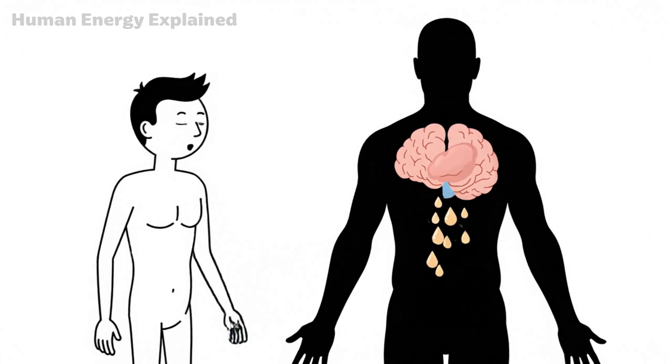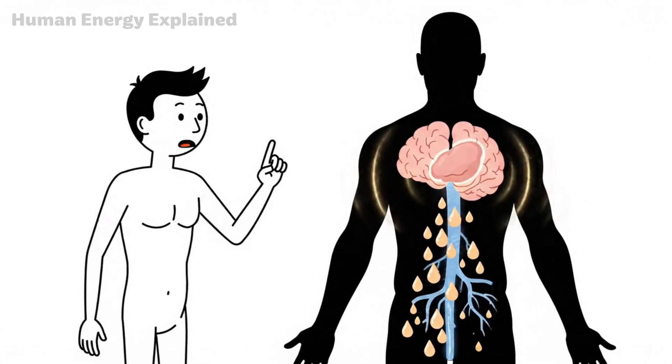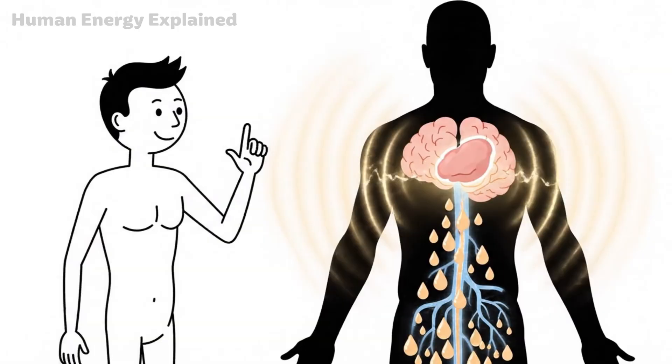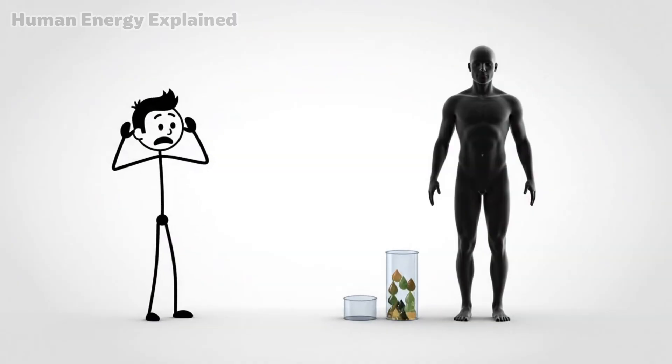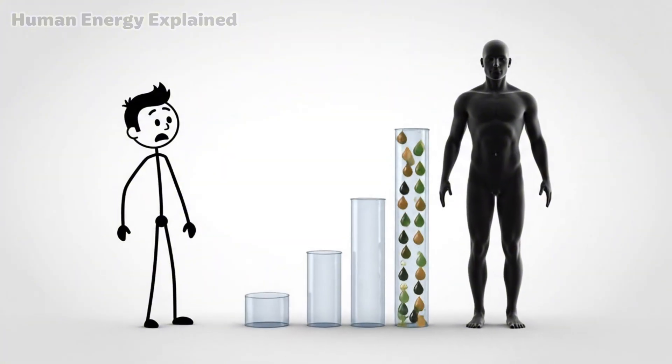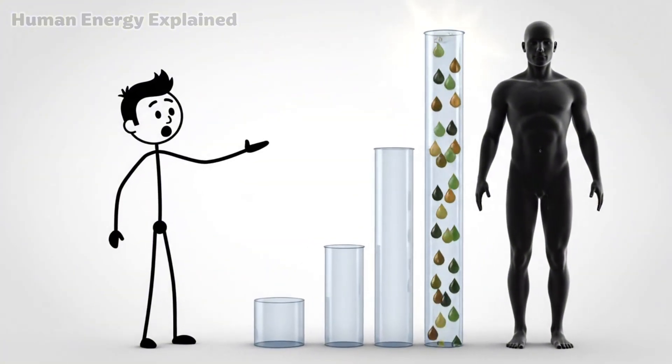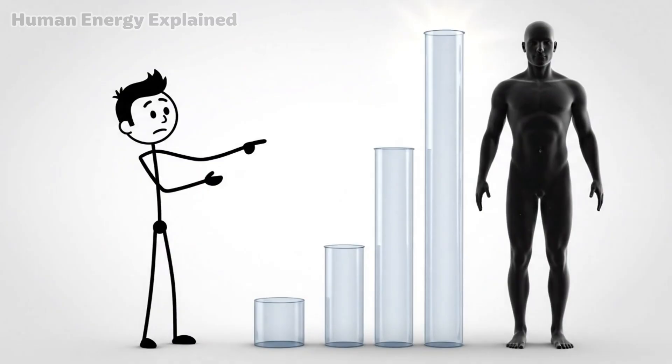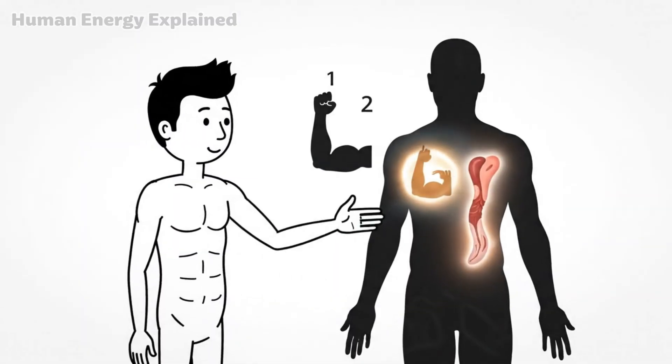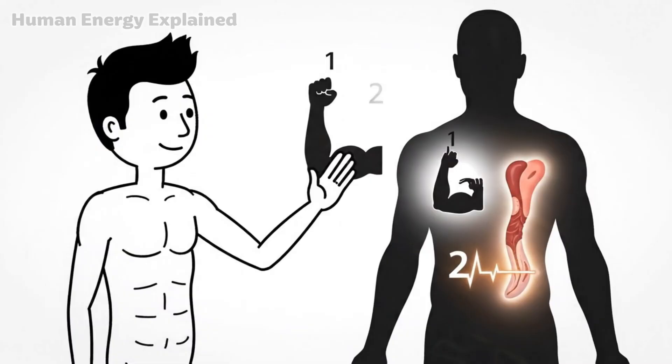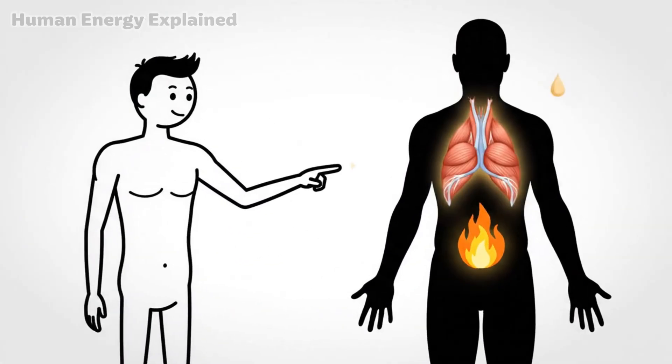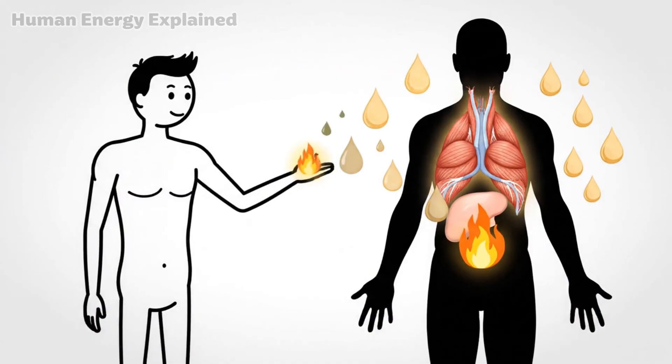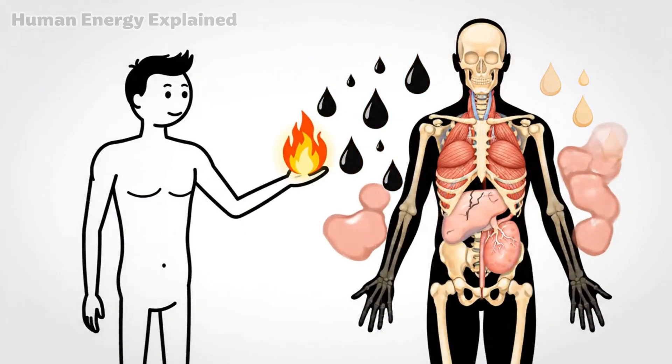But here's where the science gets truly fascinating. During this phase, your body dramatically increases production of growth hormone. We're talking two to five times higher than normal levels. Growth hormone sounds like something for bodybuilders, but its primary job is actually protection and repair. It preserves muscle tissue, promotes fat burning, and tells your body to hold on to the structures it needs while burning what it doesn't.